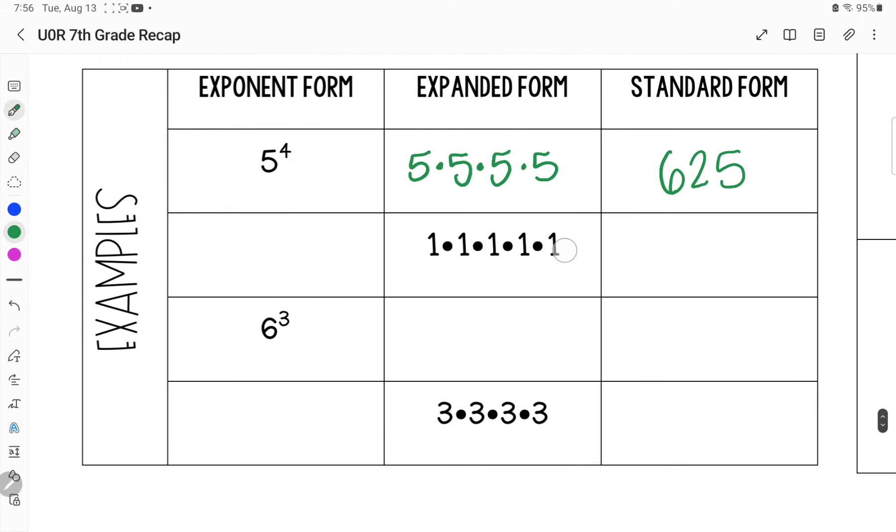On this one, they've given us our expanded form. Whatever number was repeated, that's our base number. The number of times it's repeated is the exponent. So it was repeated one, two, three, four, five. This would say we had a one five times. No matter what, one times one, however many times we multiply it, is just going to give me one.